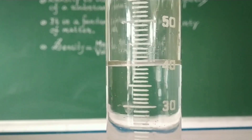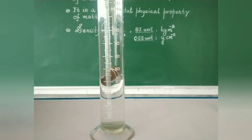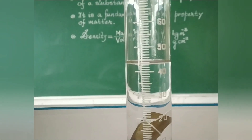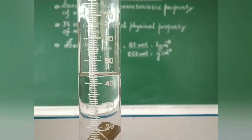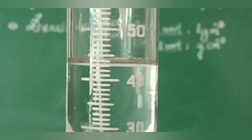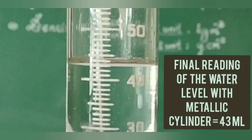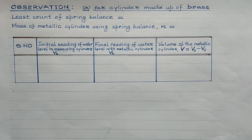We will tie the metallic cylinder with thread and suspend it fully in the water contained in the measuring cylinder. The level of water will rise up. We will note down this reading when the cylinder is completely immersed in water. While noting down the reading it is to be ensured that the eye is at the same level as that of the water. The reading is 43 milliliters.